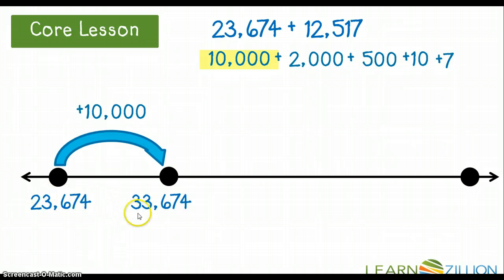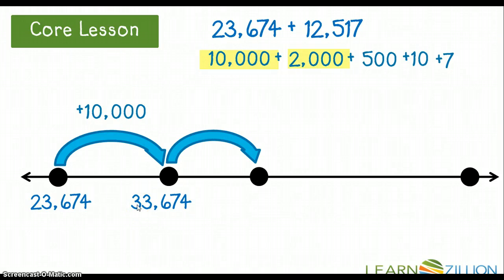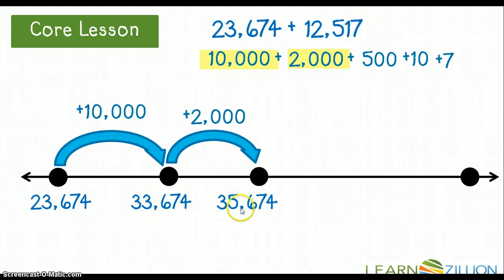My first jump: I can see I have 10,000 from 12,517, so I'm going to add that first. I know that 23,674 plus 10,000 is 33,674. Notice that the number in the 10,000s place is what changes. My next jump, I'm going to add 2,000 to 33,674. The number in the 1,000s place is going to change, so that number becomes 35,674 when 2,000 is added.